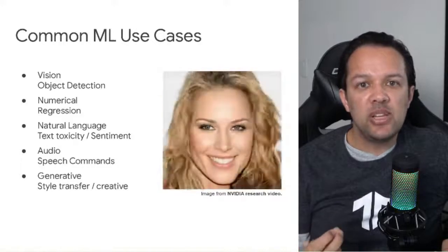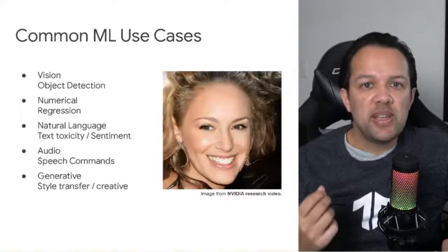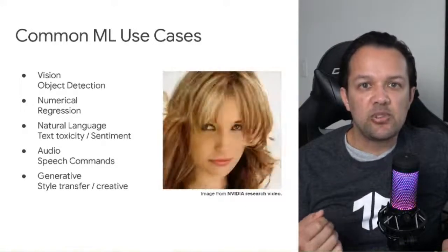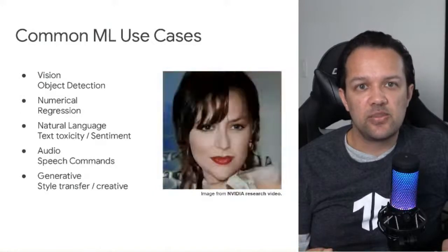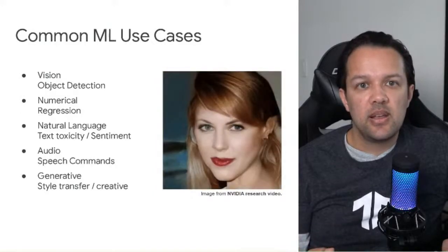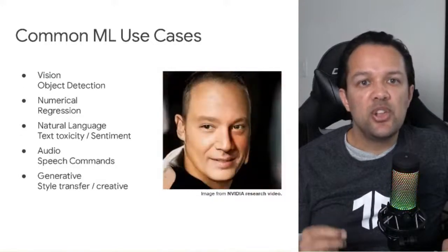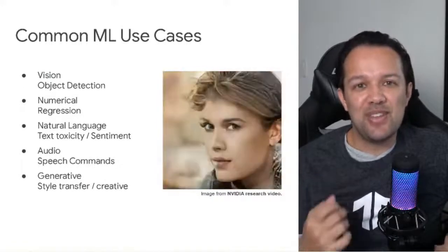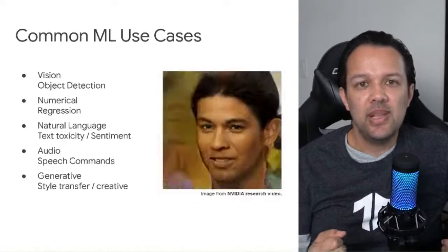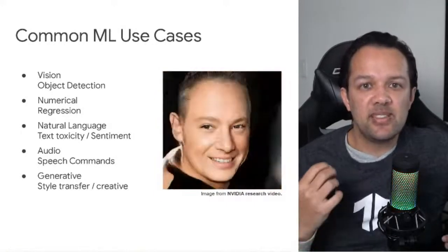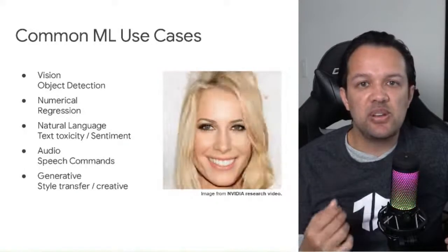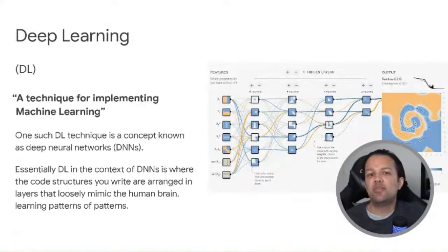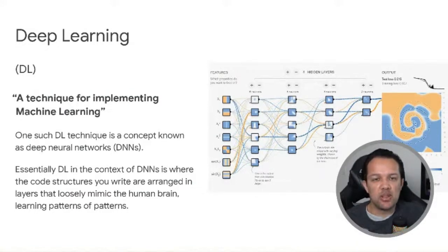And then finally, we have generative or creative examples — one of which we can see on this slide, created by NVIDIA's recent research. None of the faces in this animation are real; they've all been dreamt up by the machine learning model, just like if you imagined a purple cat even though you've never seen one. The machine learning has learned the essence of what a human face is composed of, and is then asked to generate new ones. Now, what about deep learning? Deep learning is essentially one technique you can use to implement a machine learning program.